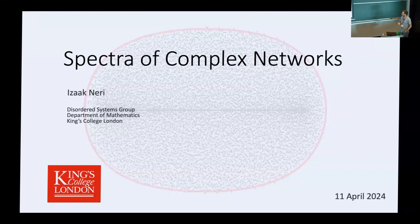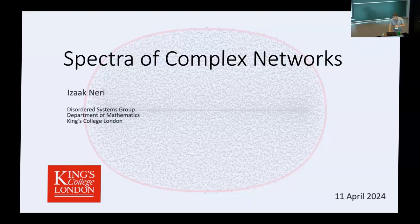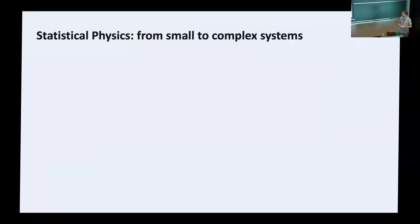In this talk, I will talk about spectra of complex networks. The main idea of this kind of research is to understand how network topology affects numerical systems defined in graphs — examples being neural networks, ecosystems, basically anything that is large and defined in a graph. The approach we follow is based on statistical physics, where we study systems with randomness using probability theory.